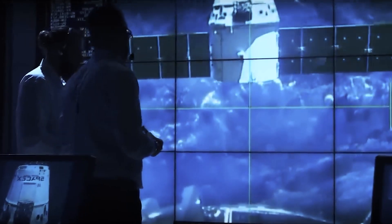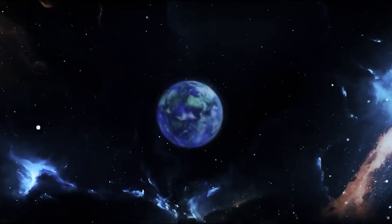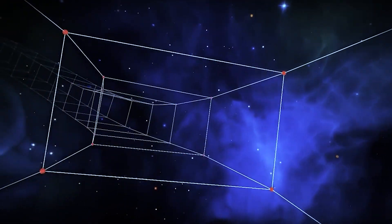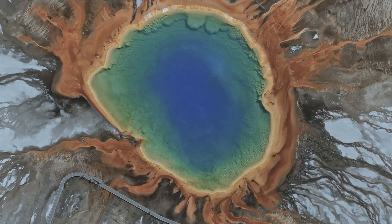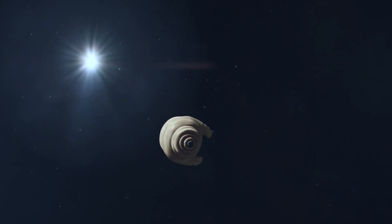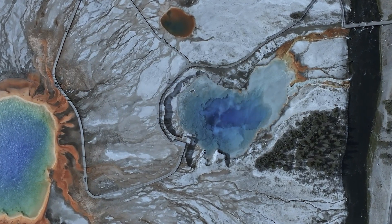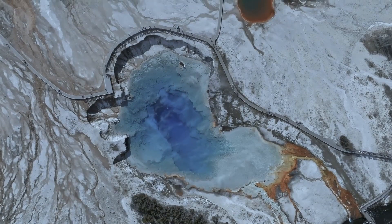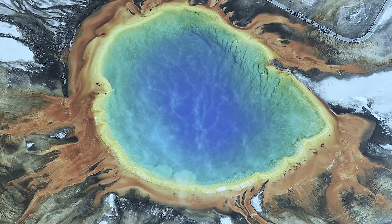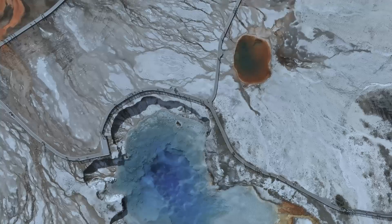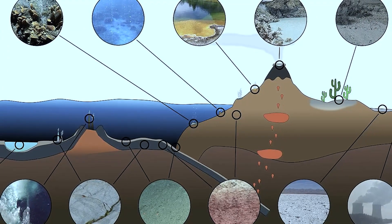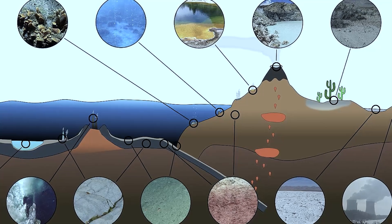Life is incredibly adaptable, and scientists are constantly surprised by the environments in which they find living organisms here on Earth. Take extremophiles, for instance. Organisms that can survive in extreme conditions, like deep-sea hydrothermal vents, acidic hot springs, or the frozen tundra. If life can thrive in these places on Earth, why not here? Perhaps the lights we're seeing are produced by some kind of extremophile.